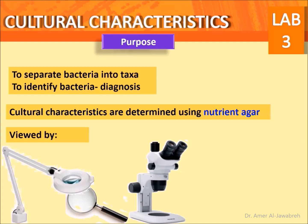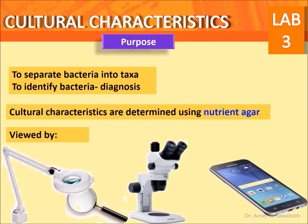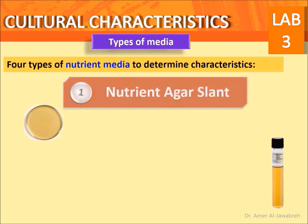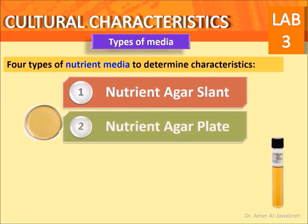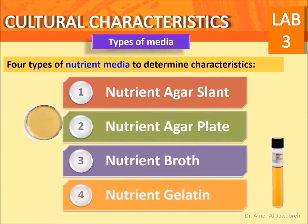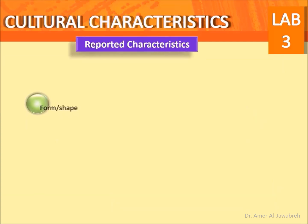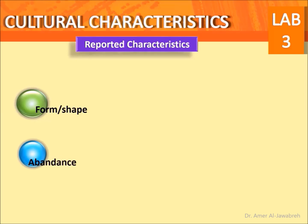Mobile phone cameras also provide good images to judge morphology. There are four types of nutrient medium used to determine characteristics: nutrient agar slant, nutrient agar plate, nutrient broth, and nutrient gelatin. Reported characteristics include form or shape, abundance, consistency, optical density, and odor — though sniffing may cause disease.